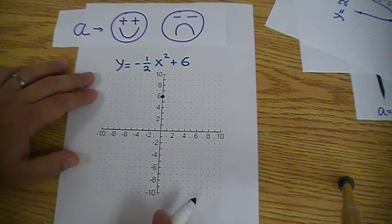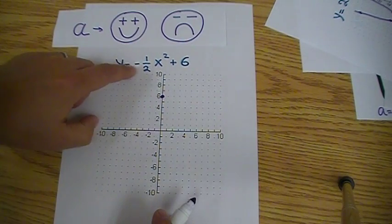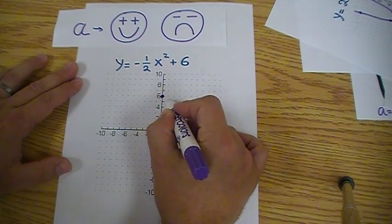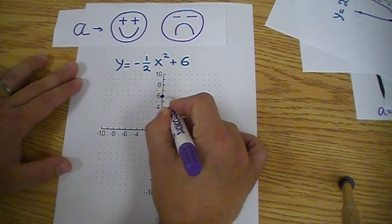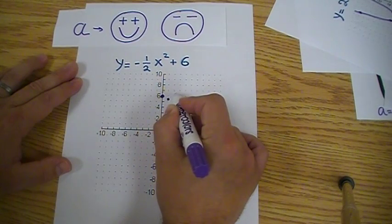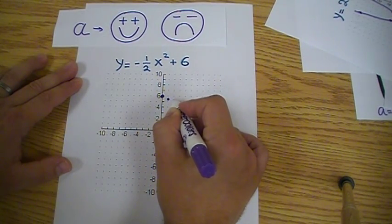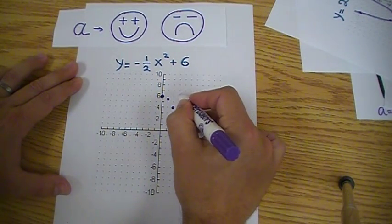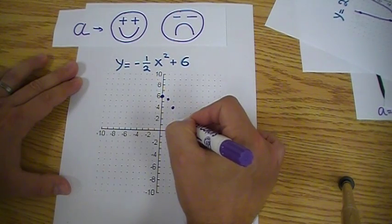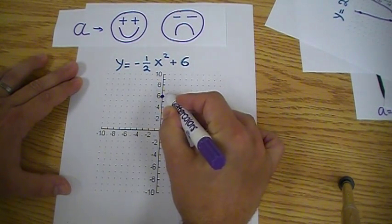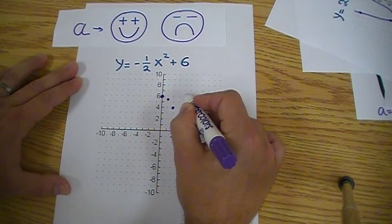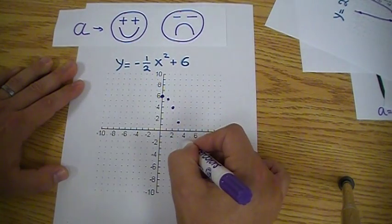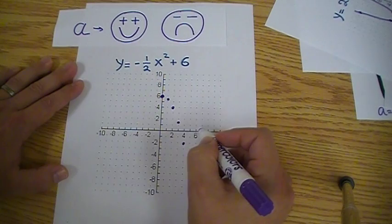Because there's a negative it opens down. So it's going to be going downwards. Because there's a half I'm going to do 1 squared, 2 squared, 3 squared and multiply by half. 1 squared is 1 times half, it's just half so I'm going to go in between. 2 squared is 4 times half, it's 2: 1, 2. 3 squared is 9 times half, it's 4.5: 1, 2, 3, 4 and a half. Back to the vertex: 1, 2, 3, 4 over. 4 squared is 16 times half, it's 8: 1, 2, 3, 4, 5, 6, 7, 8, and I'm going to keep on going until I ran out of space.